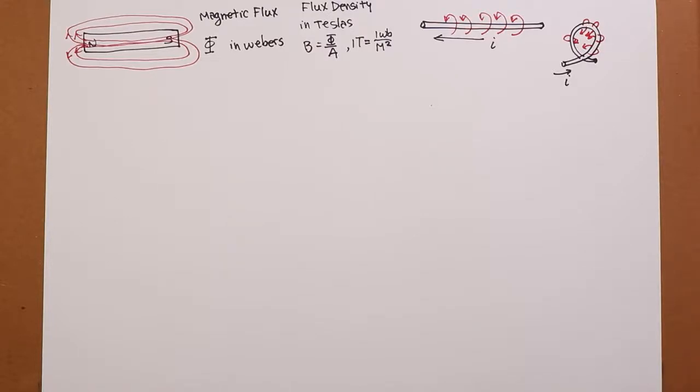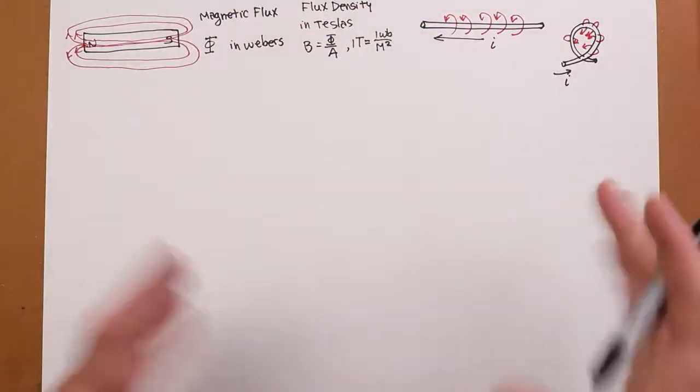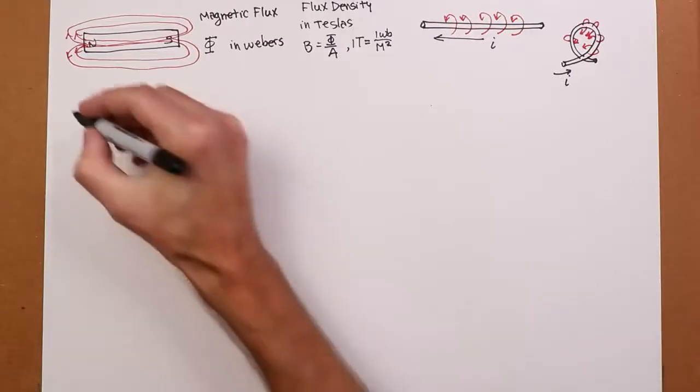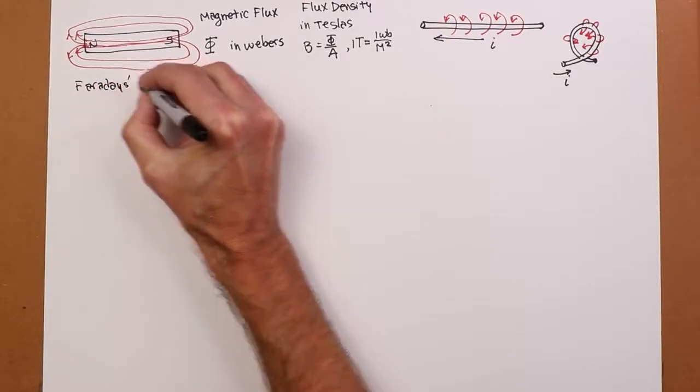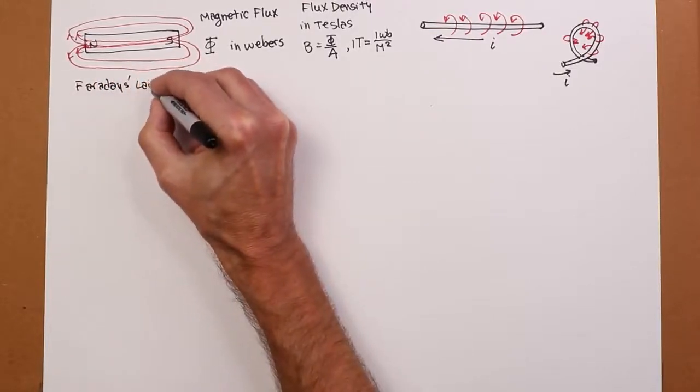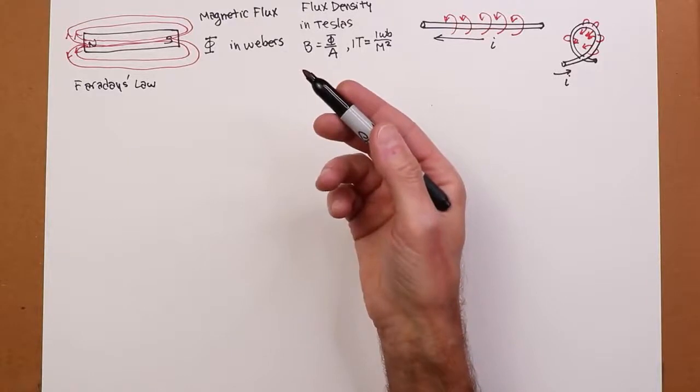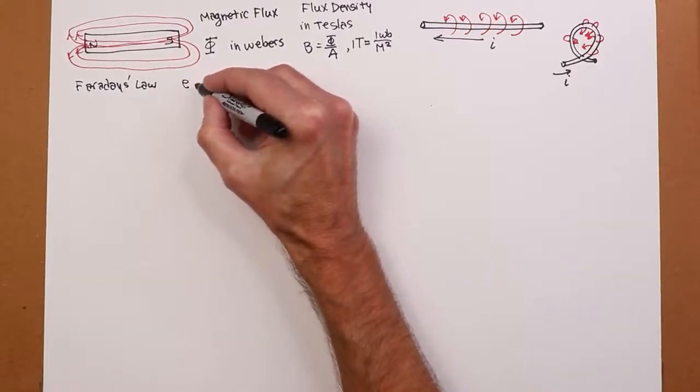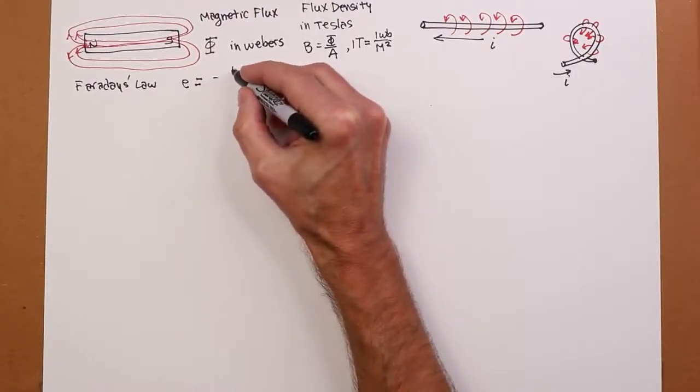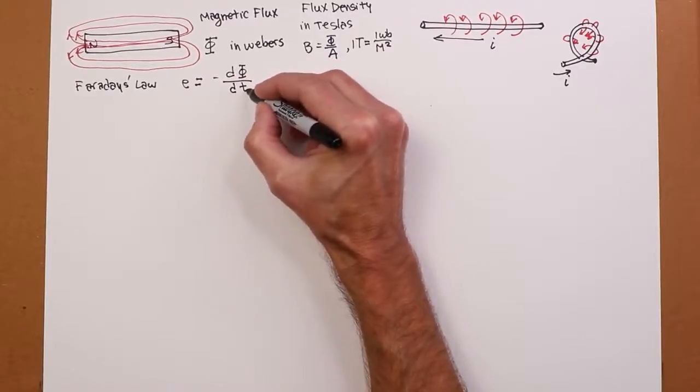So we need a good definition of flux Webbers. Now we're talking about this sort of amorphous concept of lines. What's actually going on here? Well, the useful thing is Faraday's law, which basically says that if a conductor is cut by magnetic lines of force, you can induce a voltage. So E, that induced voltage, is equal to negative change in flux versus time.